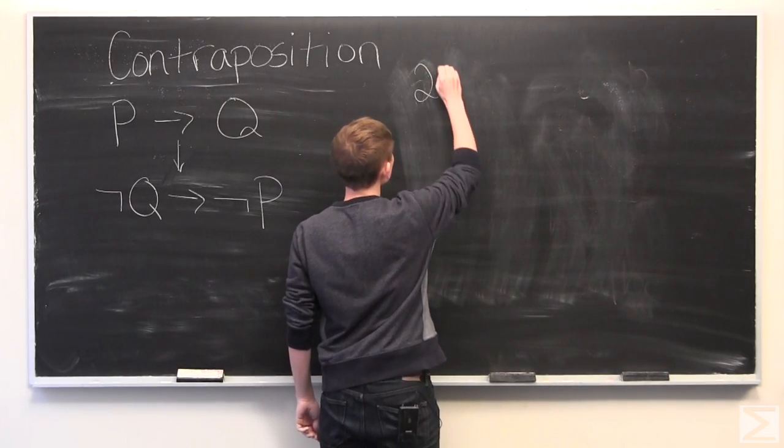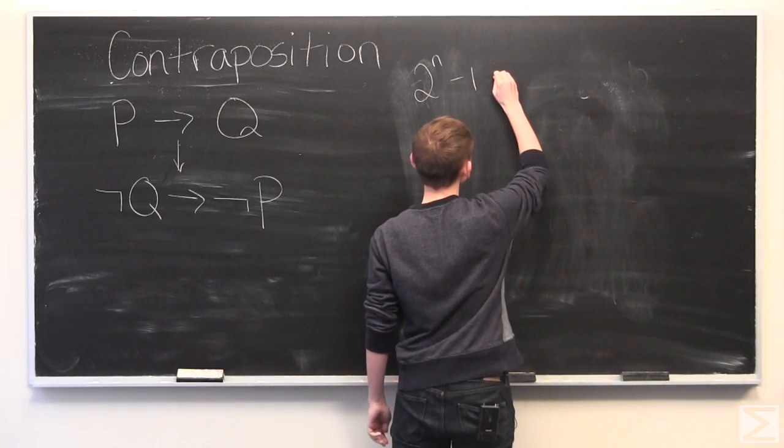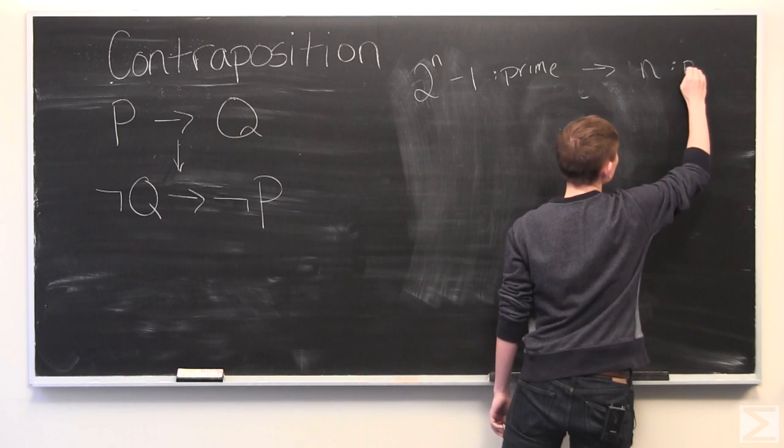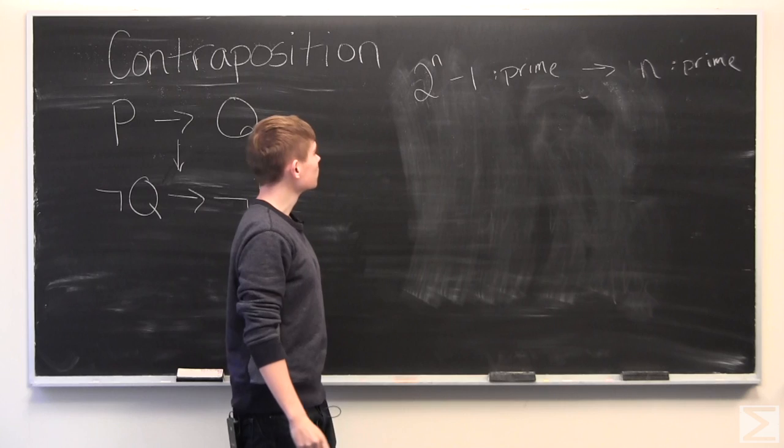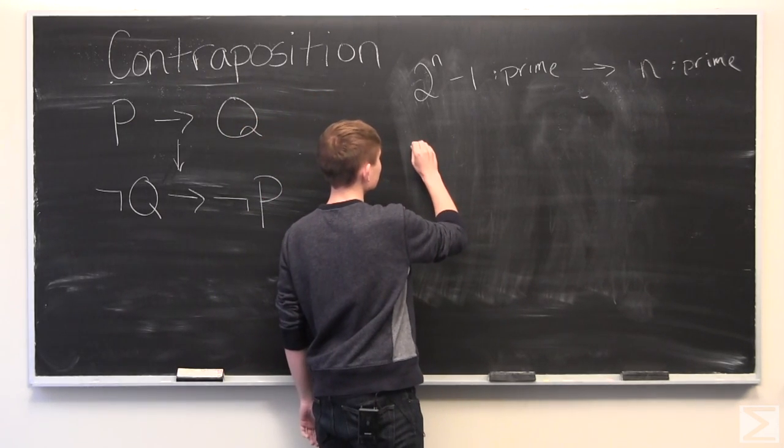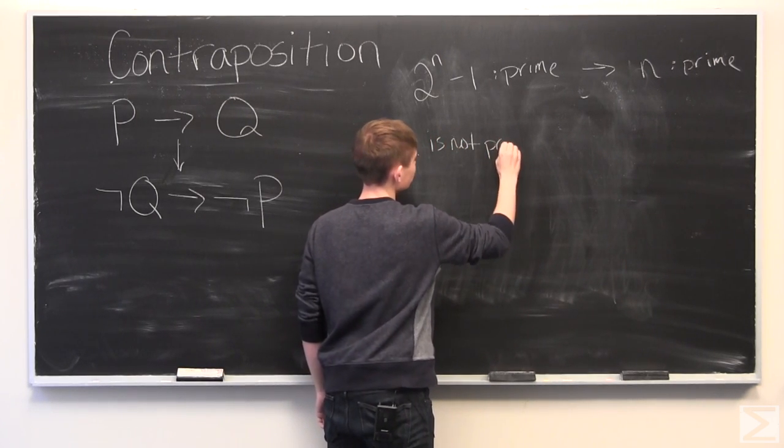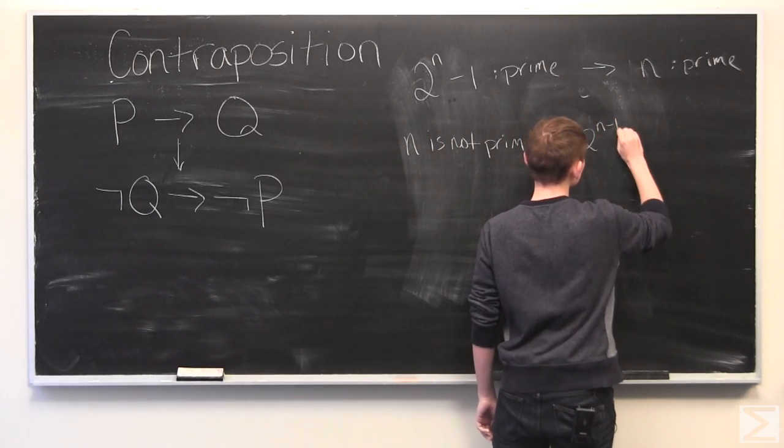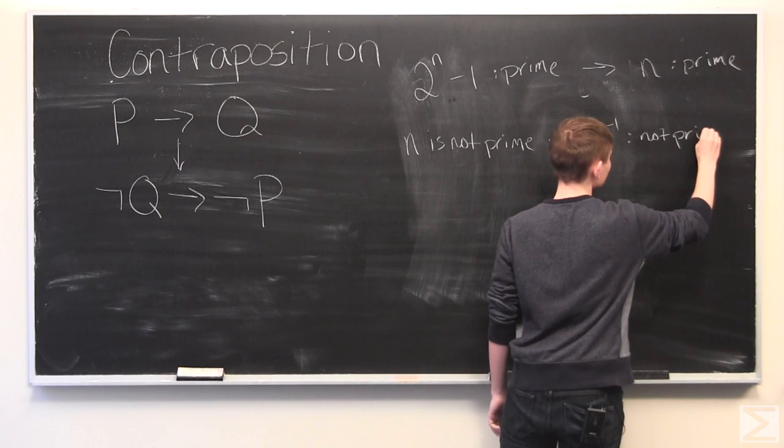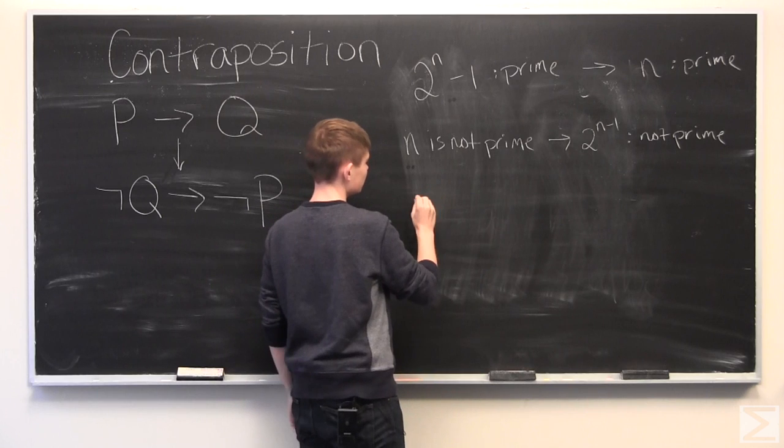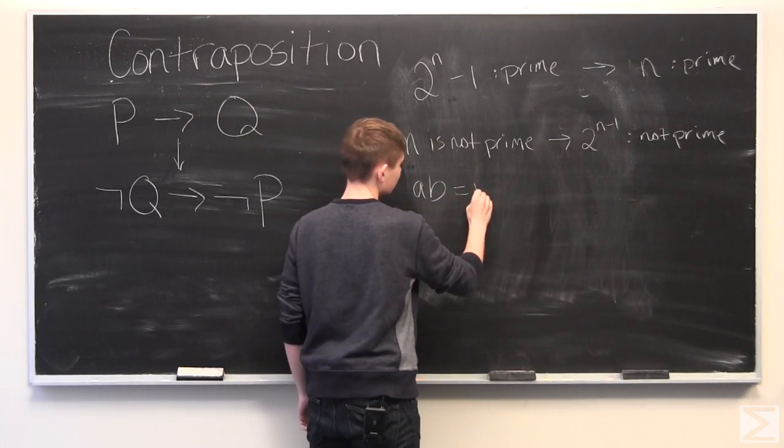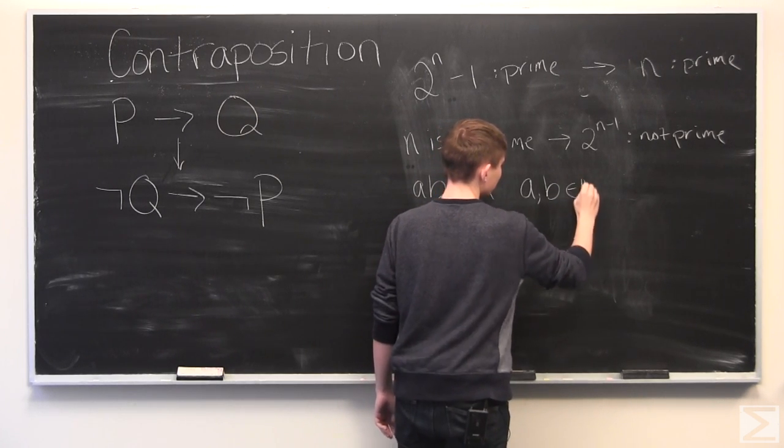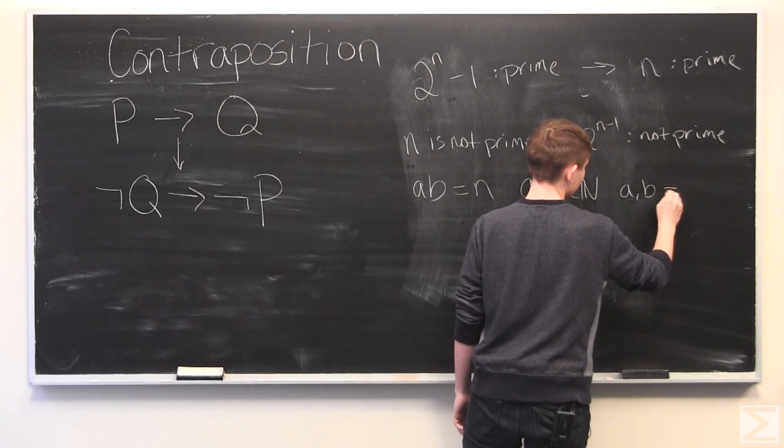So what we want to show is that if 2 to the n minus 1 is prime, this necessarily means that n is prime. And so we are going to use contraposition, which means that we want to show that if n is not prime, then 2 to the n minus 1 is not prime. So if n is not prime, that means there exists some numbers A and B, which multiplied together, equal n, where A and B are some natural numbers, and A and B are not 1.